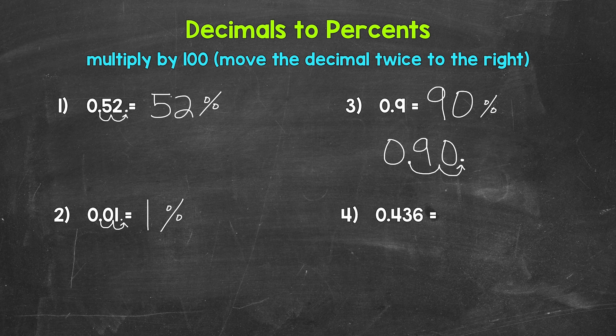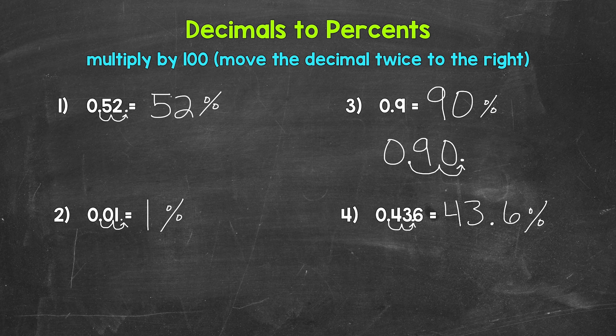Lastly, let's move on to number four, where we have 0.436 — 436 thousandths. Let's multiply by 100 by moving the decimal once, twice, to the right. So the decimal goes in between the three and the six. So we have 43.6 percent. 436 thousandths equals 43.6 percent.